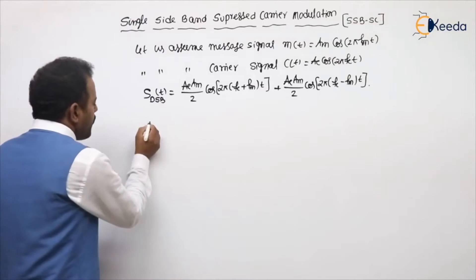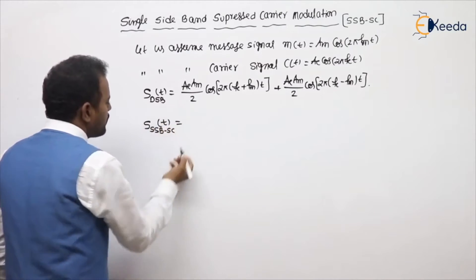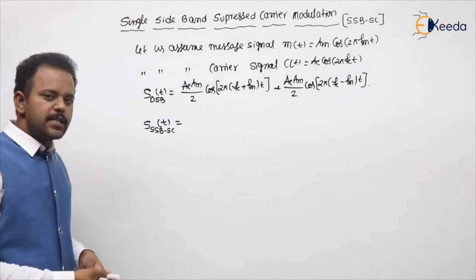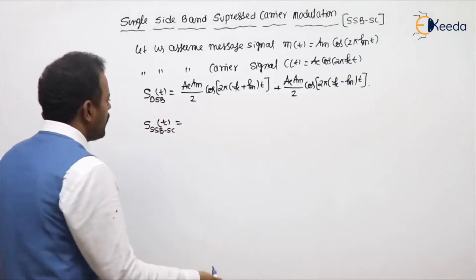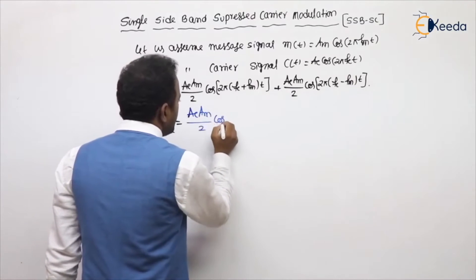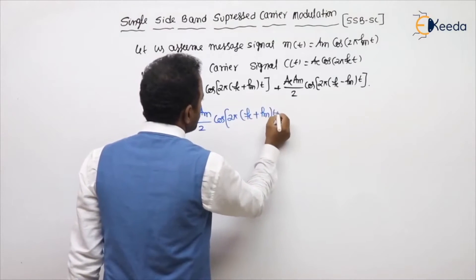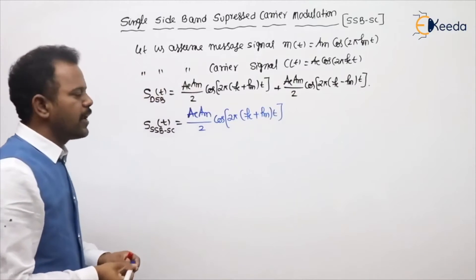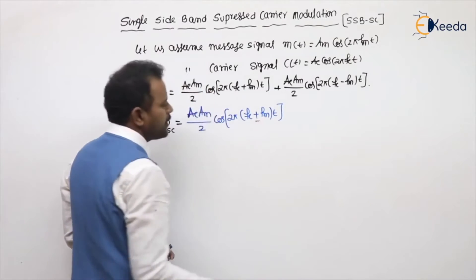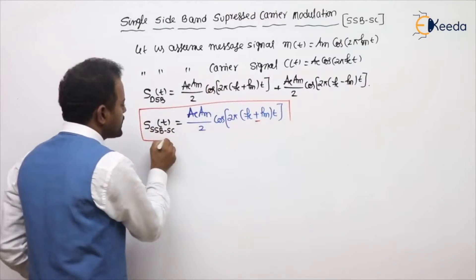Now, what is the SSBSC single-tone expression? In SSBSC, how many sidebands do we have? Only one sideband. Suppose if I want SSBSC for the upper sideband, it is (AC·AM)/2 · cos(2π(fc + fm)t). This is the SSBSC for the upper sideband. Suppose if I want SSBSC for the lower sideband, it is (AC·AM)/2 · cos(2π(fc − fm)t). This is the single-tone expression of SSBSC modulation. Here, plus indicates the upper sideband and minus indicates the lower sideband.